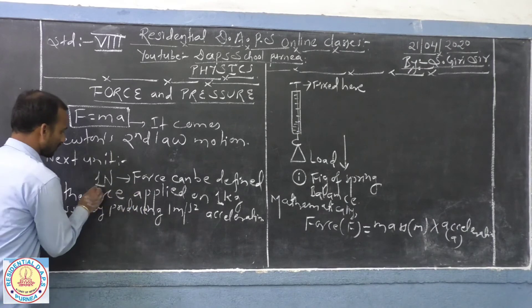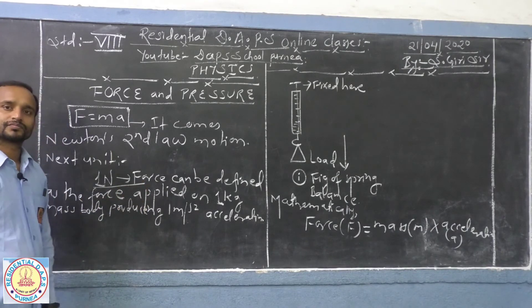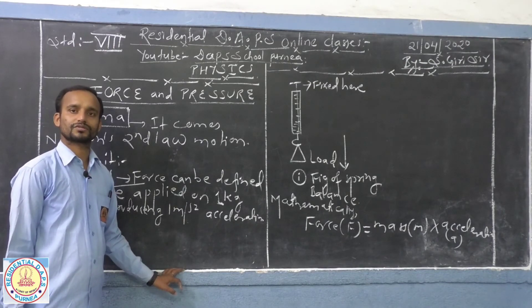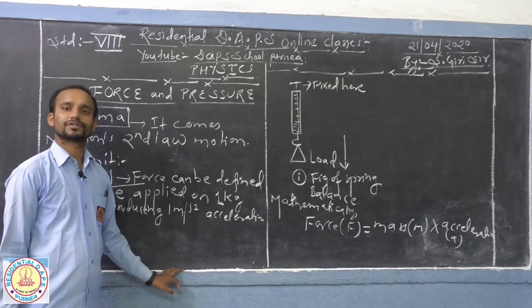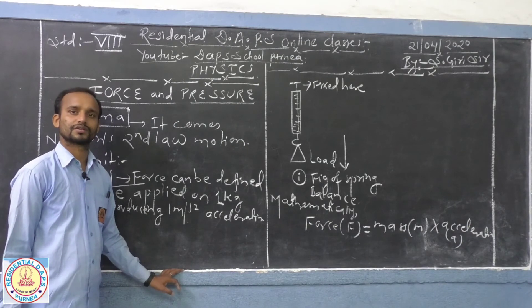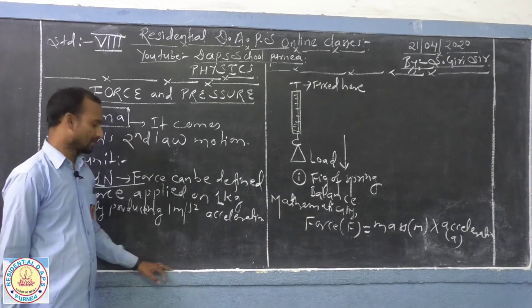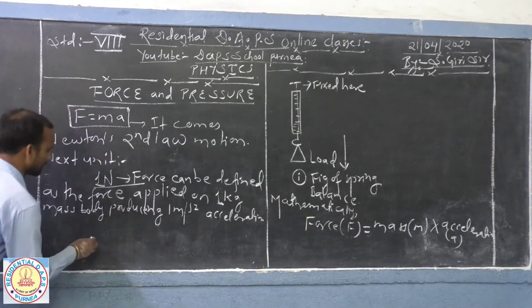Not to forget, there are different systems of measurement: CGS unit, FPS unit, and MKS unit is taken as SI unit. So here in your book, it is given here.